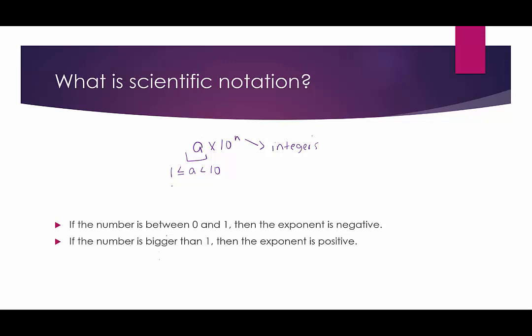If the number is bigger than 1, the exponent is positive. So if the number is 17, in scientific notation it would be written as 1.7 times 10 to the 1 — we multiply the 1.7 by 10 to make that number bigger. And in very rare cases if the number is between 1 and 10 itself, like 7, we'd write it as 7 times 10 to the 0.